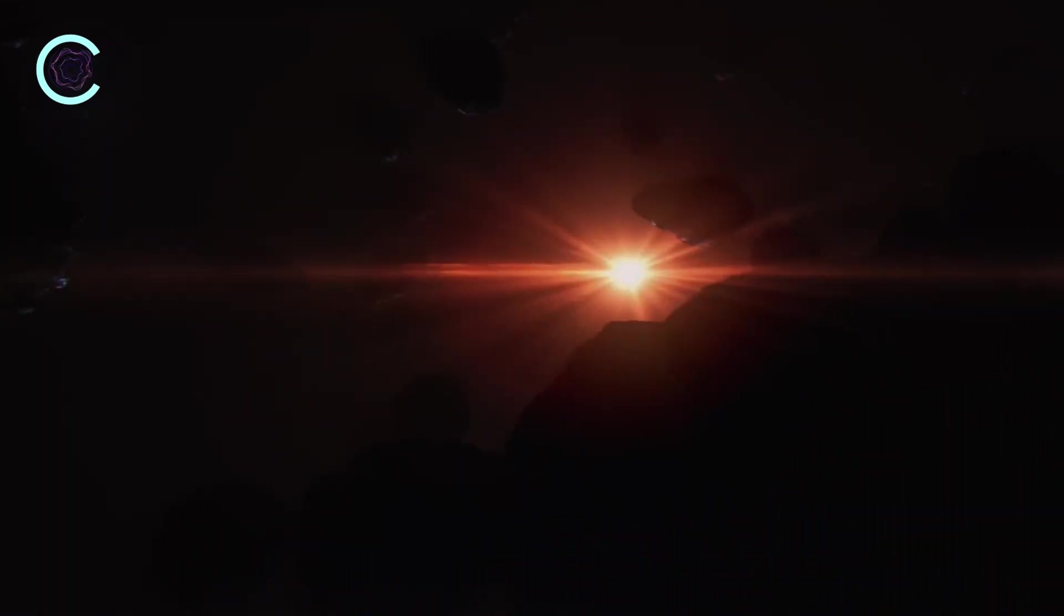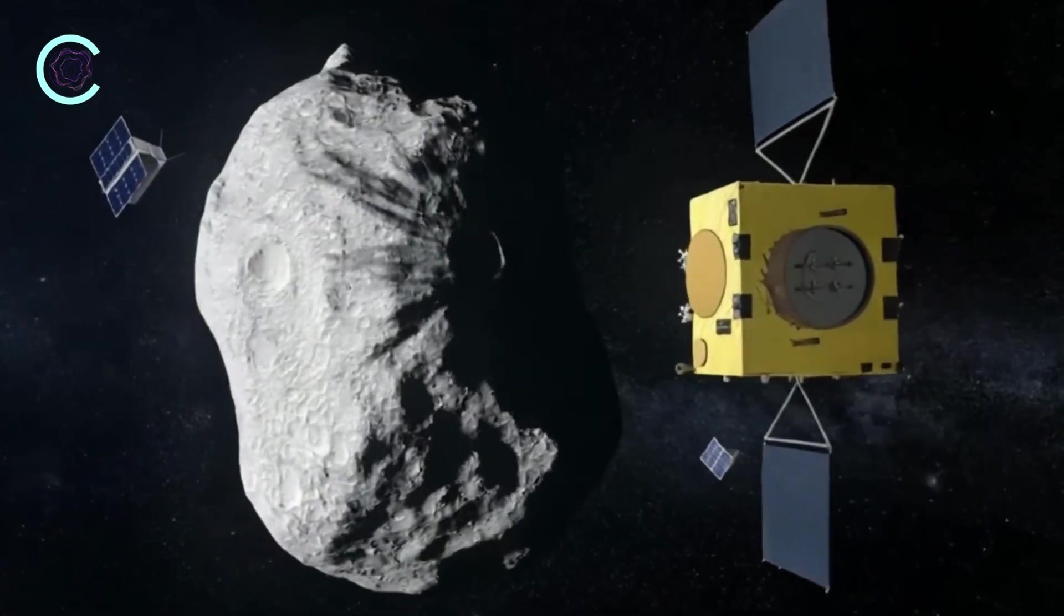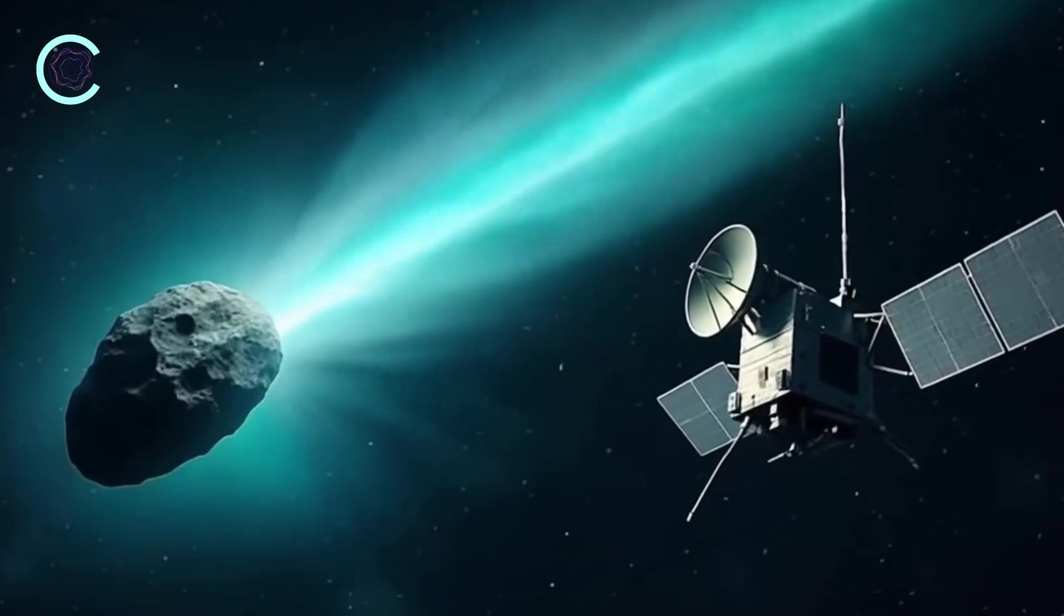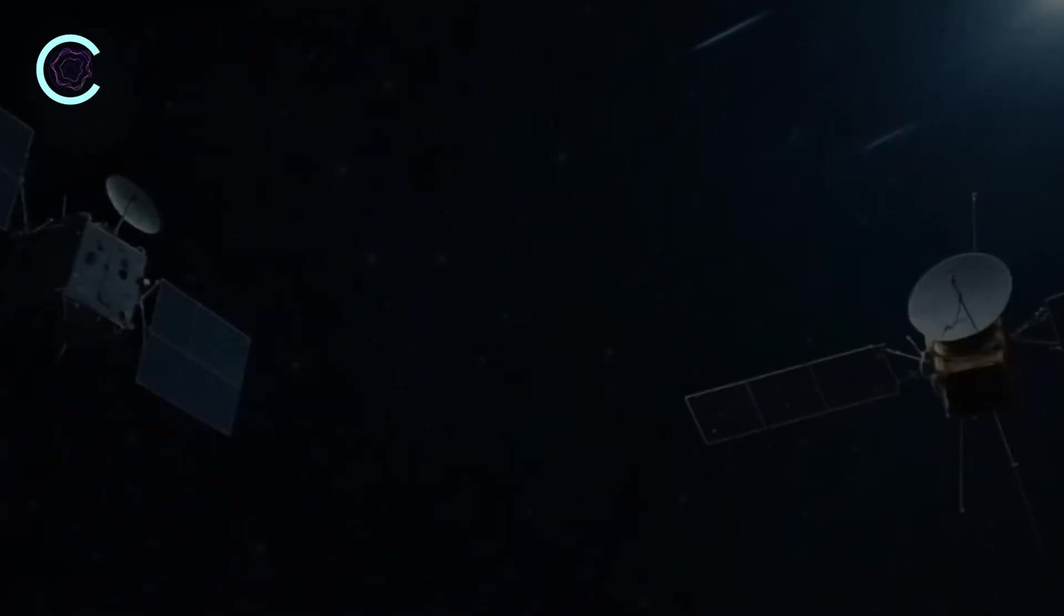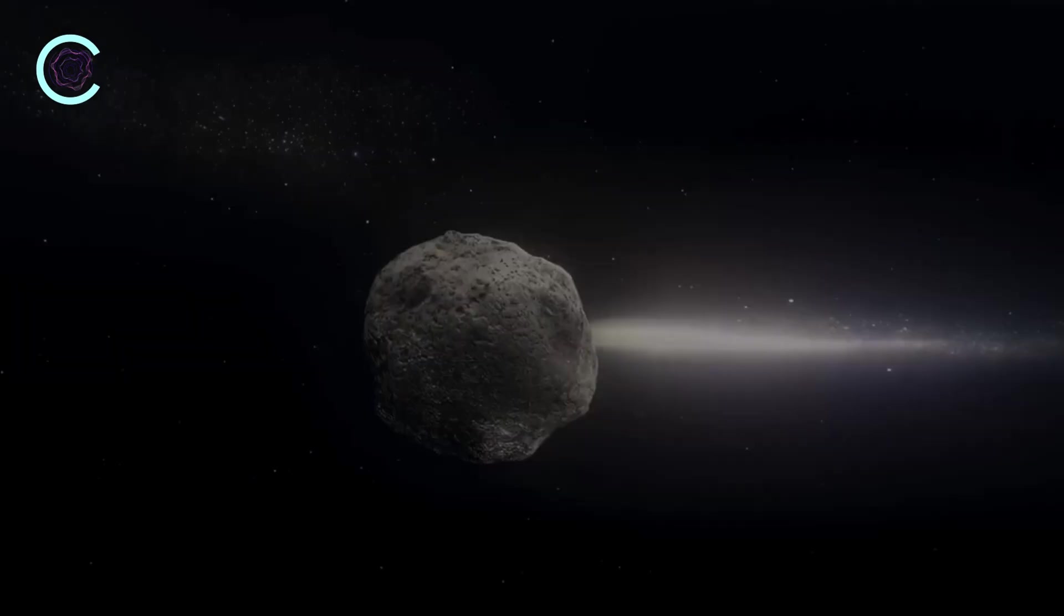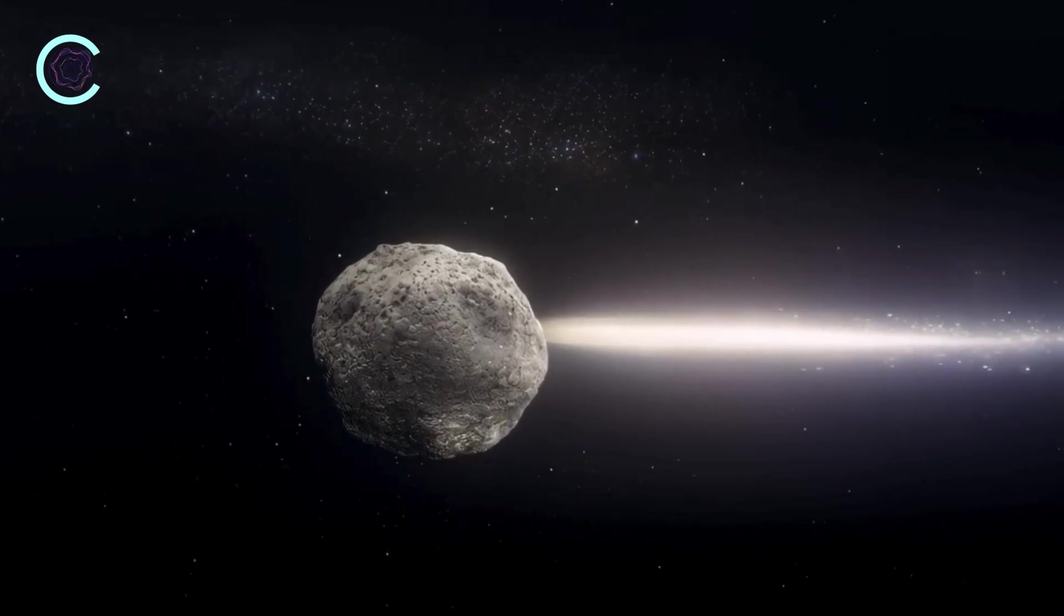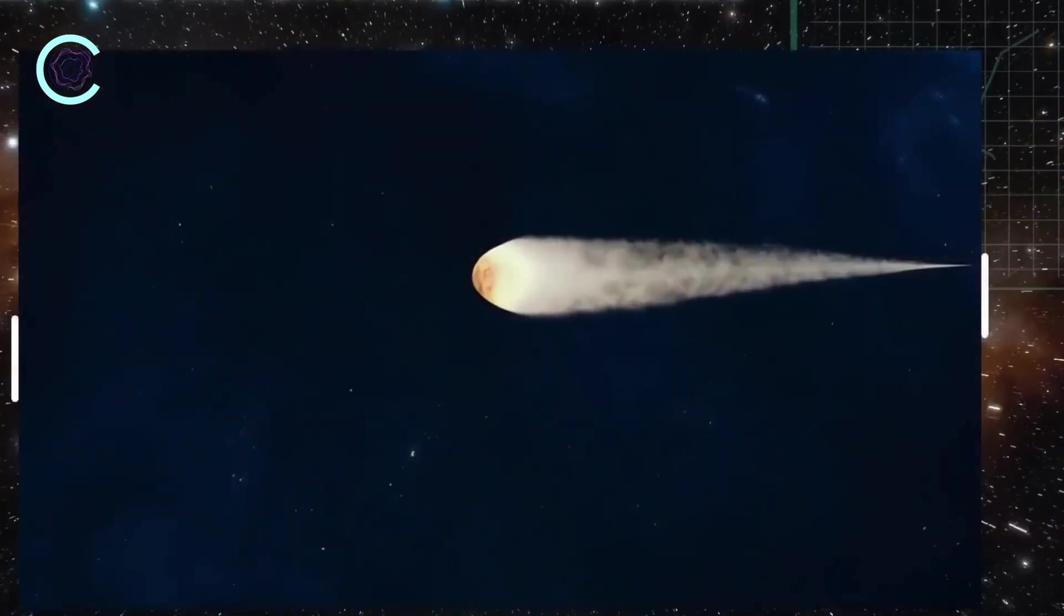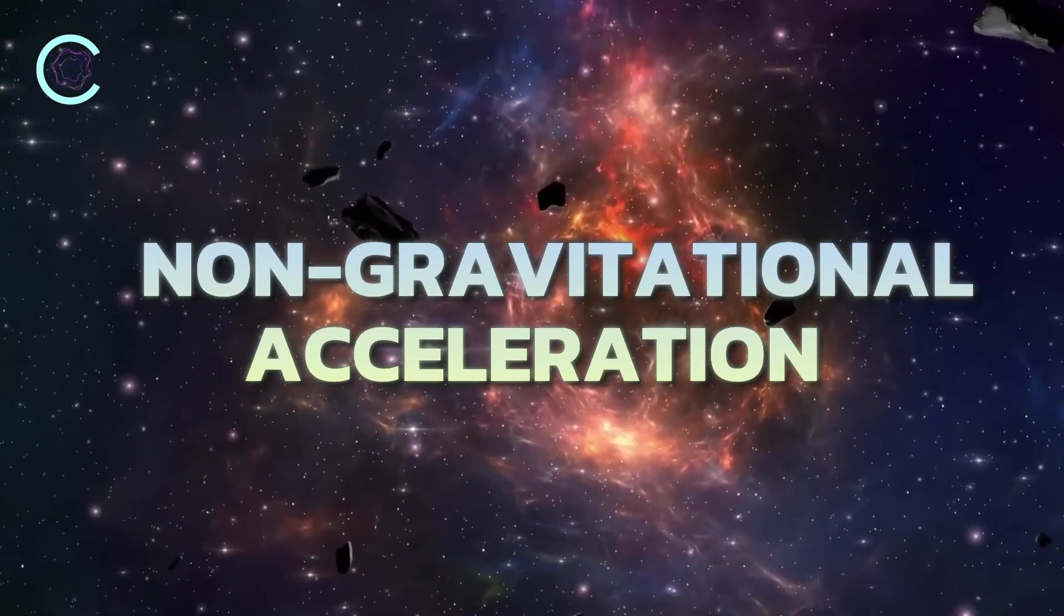Ever since 3I Atlas was first spotted back in early May, astronomers have been monitoring its movement with incredible precision. And that's because, under normal circumstances, a comet behaves nothing like a solid, predictable object. Instead, comets act more like giant, leaky engines drifting through space. As they get closer to the sun, the ice on their surface heats up, turning into gas that bursts outward in small jets. These jets act like tiny thrusters, pushing the comet around in random, unpredictable ways. This constant drifting and wobbling is so common that astronomers have a name for it — non-gravitational acceleration, or NGA.